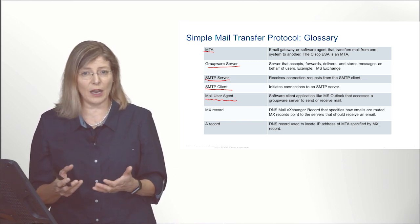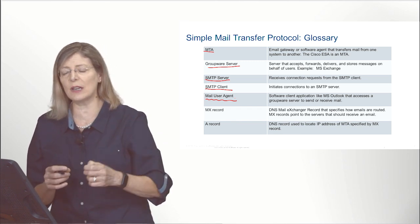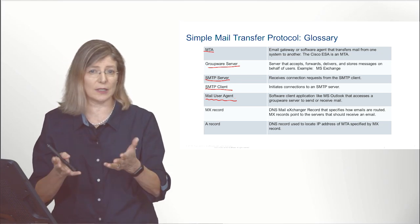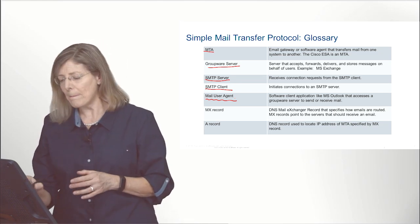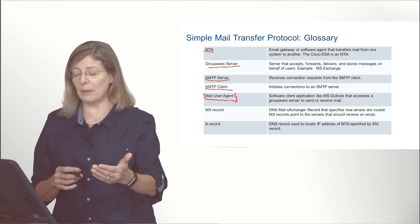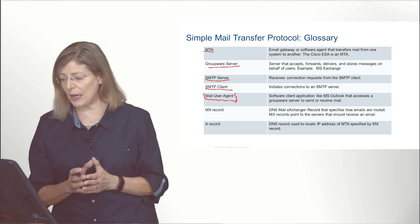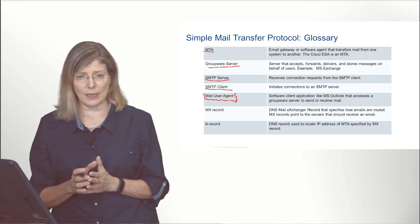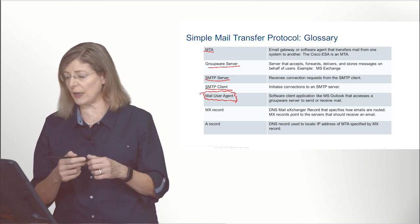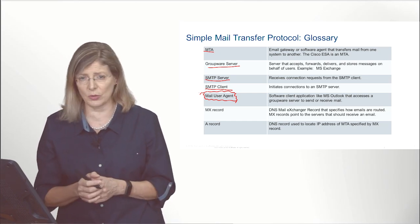Anything that connects to a server on port 25 is an SMTP client. A mail user agent — like Outlook or Thunderbird — may send out email on port 25 or other special ports. The mail user agent is more the graphical user interface used to send out mail.